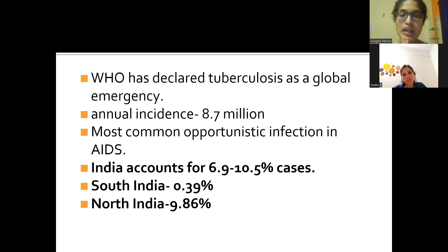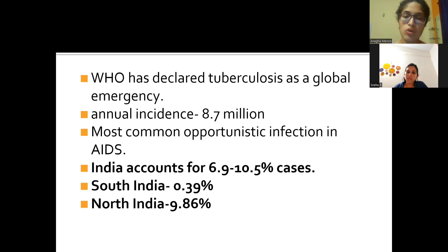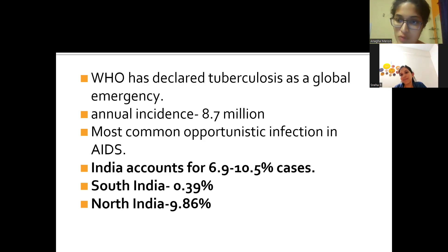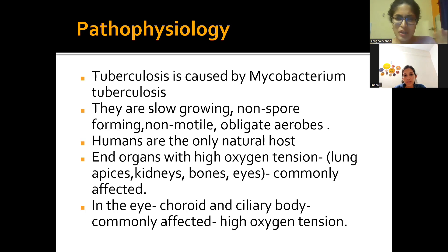The annual incidence is around 8.7 million as documented in 2021. TB is the most common opportunistic infection in AIDS. India is the TB capital of the world, accounting for around 6.9 to 10.5 percent of cases. North India has a higher predilection at 9.86 percent and South India at 0.39 percent. We should always apply a margin of error to these statistics as documentation is poor.